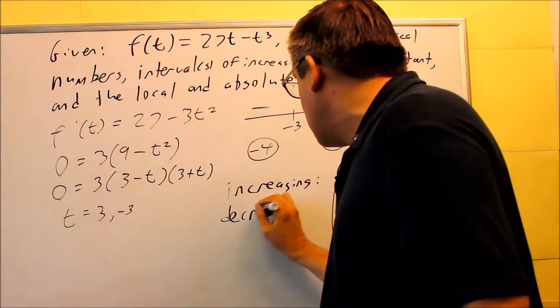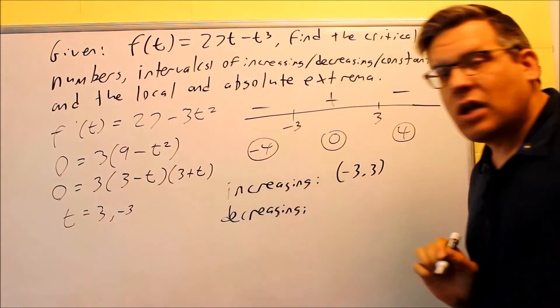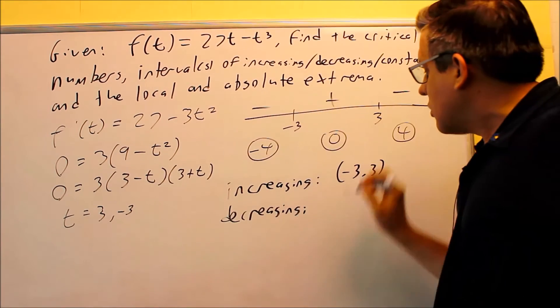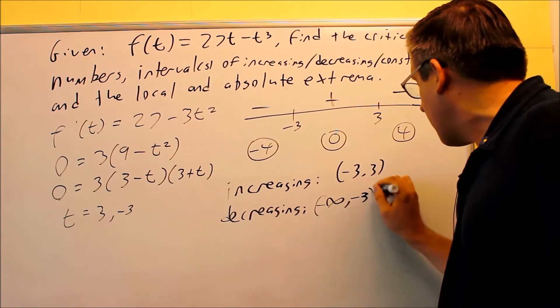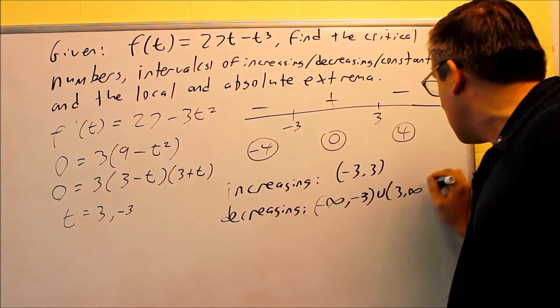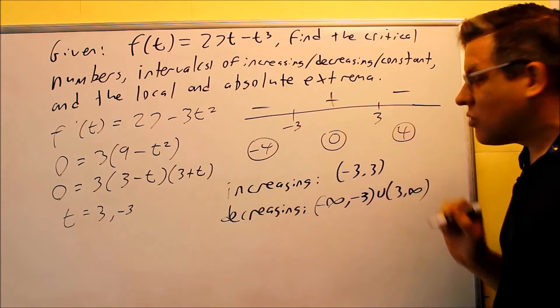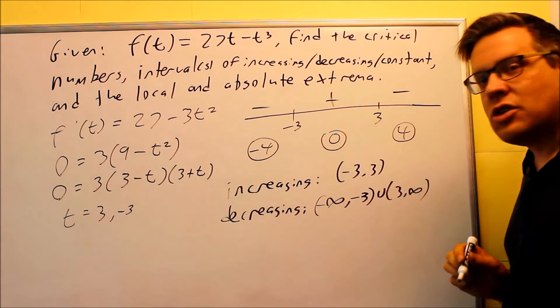Then we're going to do decreasing. Here, decreasing intervals are the ones that have negatives. So these two here: negative infinity to negative 3, and then from 3 to infinity. So any place with negatives has a negative slope. Therefore, it's decreasing.